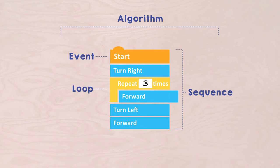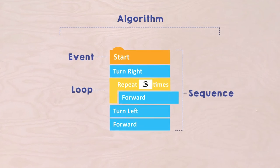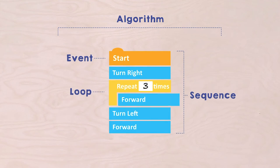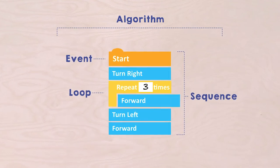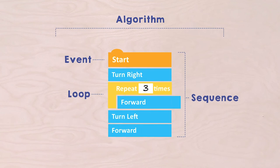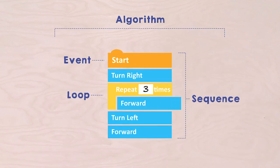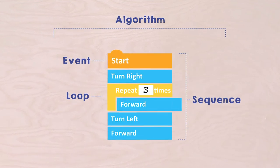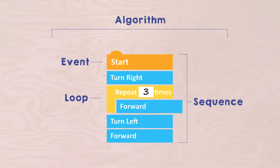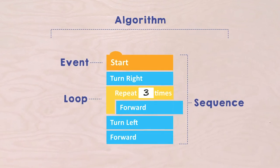Now you know that an algorithm is a step-by-step plan to solve a problem, that an algorithm starts with an EVENT, that a series of steps within such an algorithm is called a SEQUENCE, and that a sequence can contain LOOPS — pieces that are repeated a number of times. Well done! You have helped again to make the ocean a little cleaner and safer for the animals. Great that you joined us, and until the next mission!